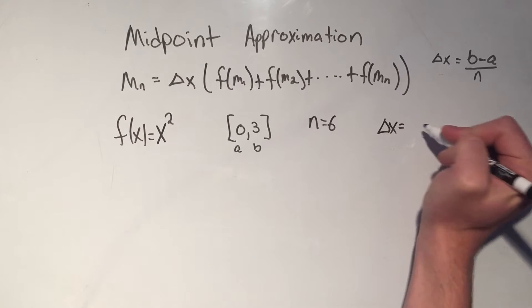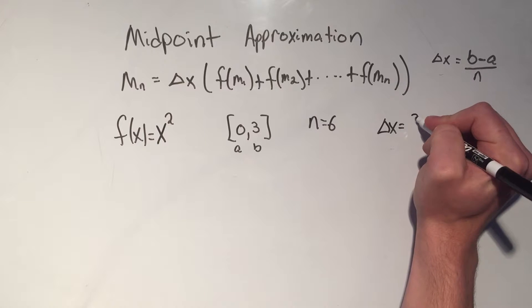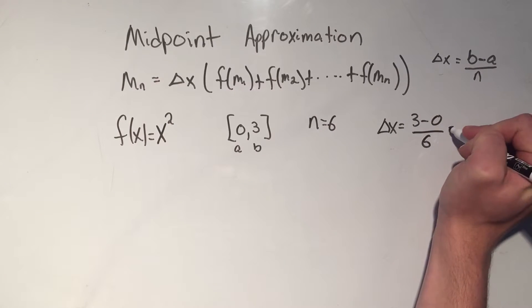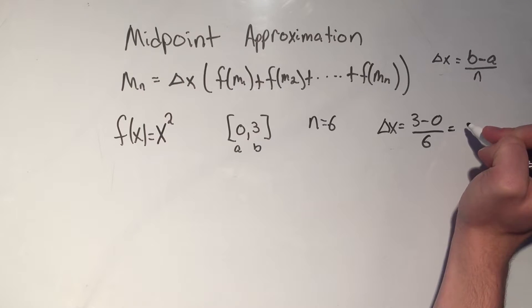Okay, so now I just need to calculate this thing. I'll start with delta x. That's the easiest part. Delta x is b minus a over n. That's 3 minus 0 over 6. That's 3 over 6, or 1 half.